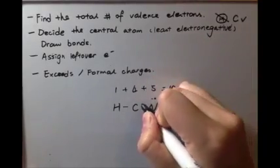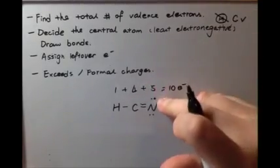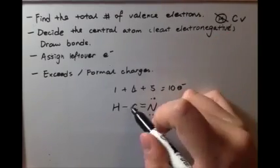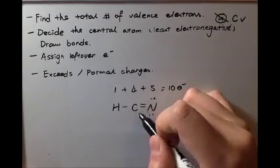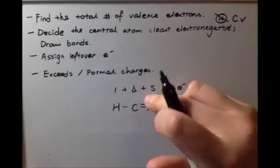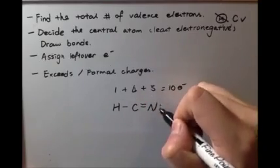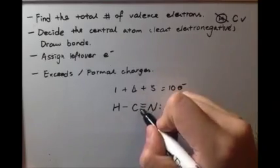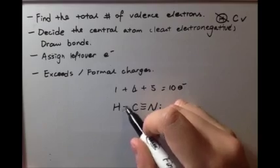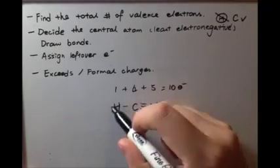So we change it to a double bond and remove a lone pair. Now it's still fulfilling the octet rule, but carbon now has six, which is still not enough. So we erase one more lone pair and add one more bond. Now carbon has eight, nitrogen has eight, and hydrogen has two.